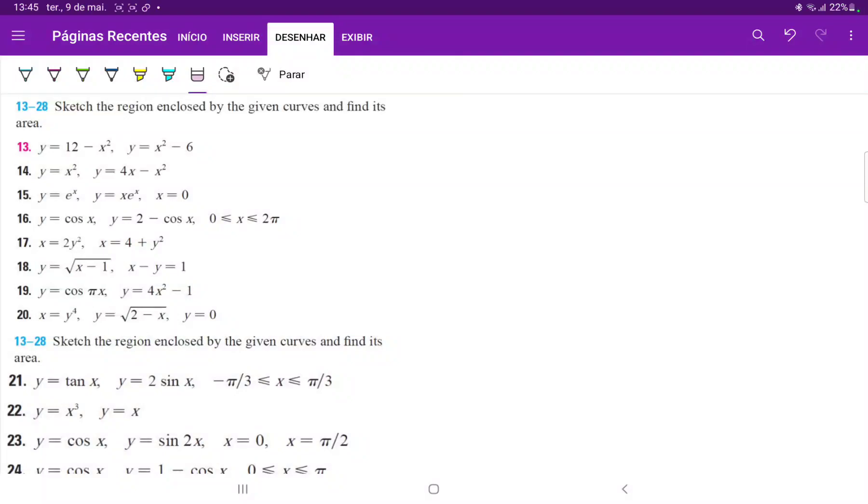For number 16, we have to draw the curves and then find the area between them from 0 to 2 pi.